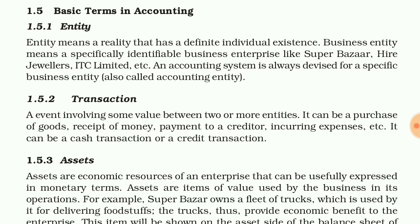So the accounting system we are working with is always linked to a specific entity. To summarize: entity means a reality that has a definite individual existence. Business entity means a specific identifiable business enterprise — examples include Super Bajar, Big Bajar, Hire Jewelers, and ITC Limited. One accounting system is used for a specific business entity, and we call it the accounting entity.